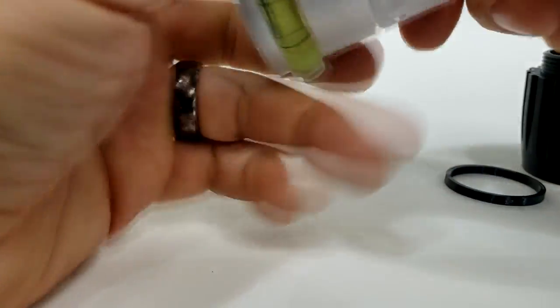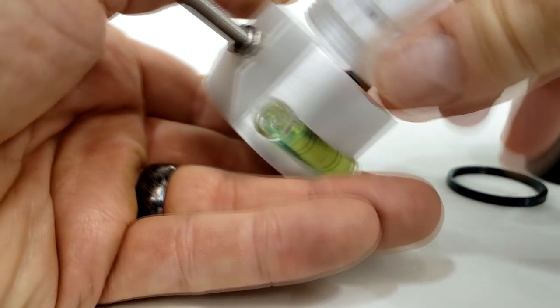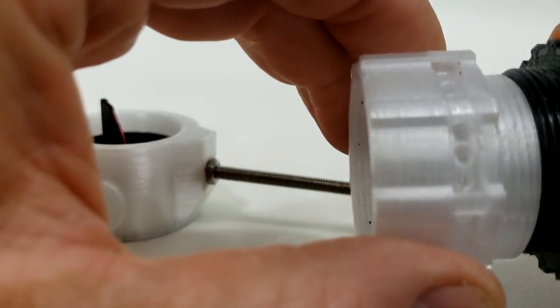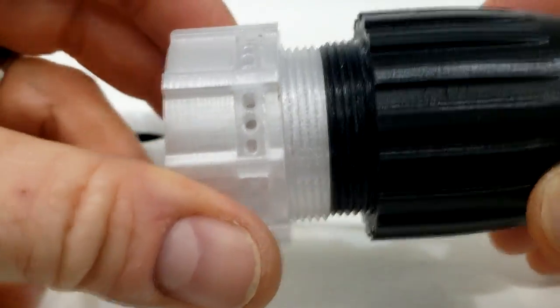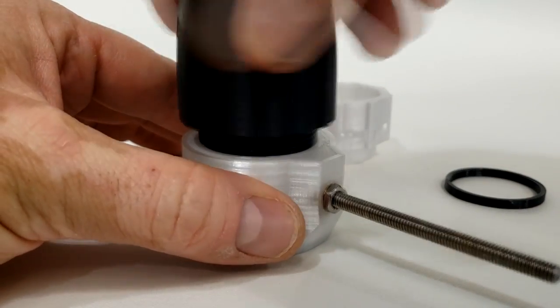Now if you don't want to run the lens retainer, the lens retainer and the sunshade both have the same size and length of threads. So you can use the sunshade in place of the lens retainer if you like a shorter scope.